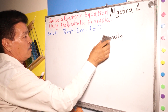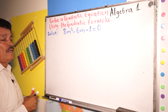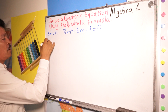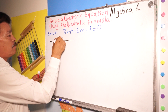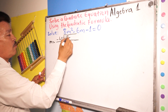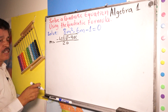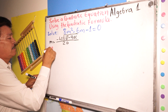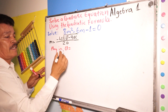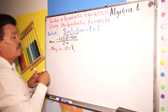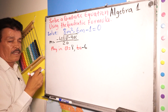Let's solve the problem. First step: simplify and use the formula. We have m equals negative b plus or minus the square root of b squared minus 4ac, divided by 2a. Now plug in the values. Here a equals 8, and b equals negative 6.